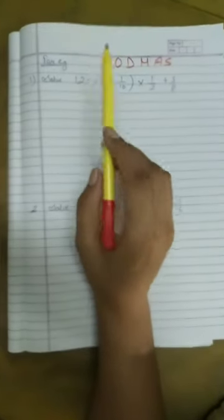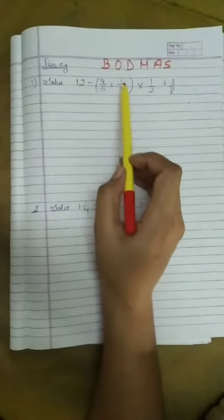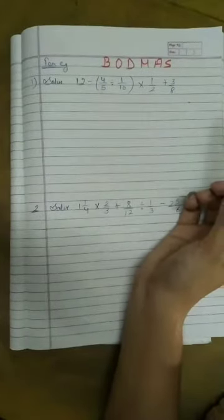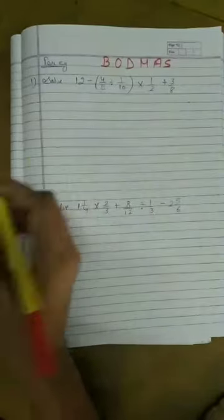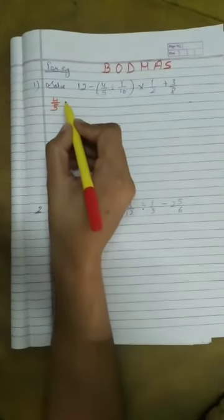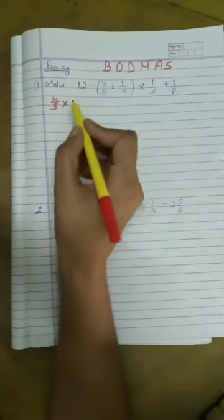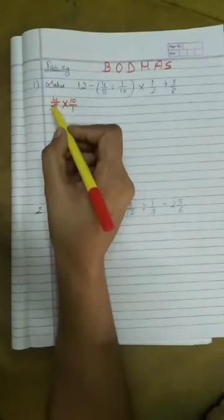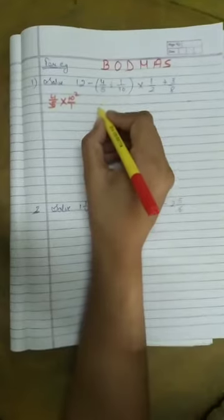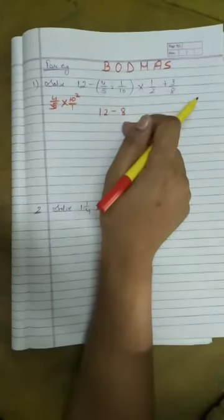Firstly, we have to solve the bracket. The bracket is 4 divided by 5 divided by 1 by 10. We have to solve the bracket first. So if we solve the bracket, this will be 4 by 5 divided becomes multiply and 1 by 10. We do the reciprocal 10 by 1. This solves to 8. So now our expression becomes 12 minus 8, bracket is solved, and the bracket value is 8.